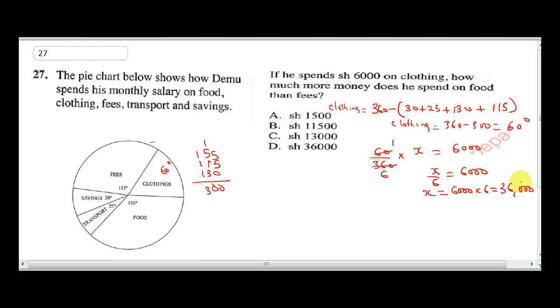Now the question says how much money does he spend on food than fees? So for food, that will be 130 over 360 times 36,000. 360 here is one, 360 to 36,000 would be 100, so food gave him 130 times 100, that's 13,000. Then fees was 115 over 360 times 36,000, so fees give a total of 11,500.